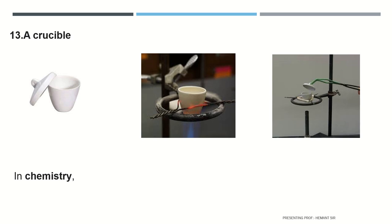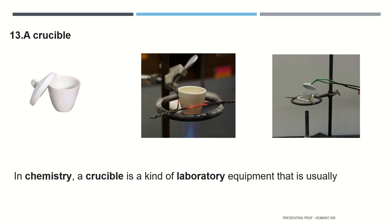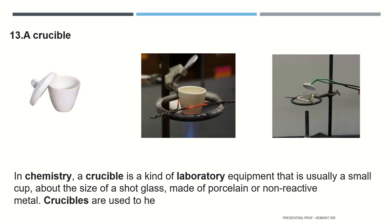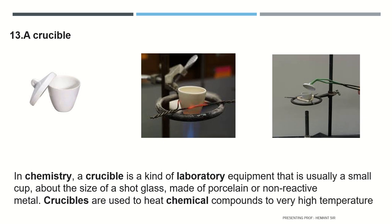In chemistry, a crucible is a kind of laboratory equipment that is usually a small cup about the size of a shot glass, made of porcelain or non-reactive metal. Crucibles are used to heat chemical compounds to very high temperatures using a gas burner.